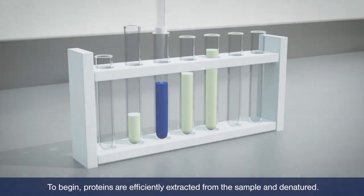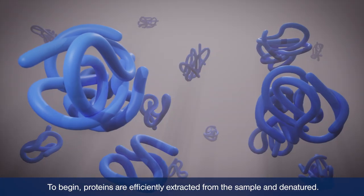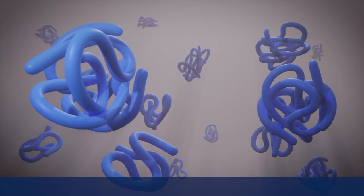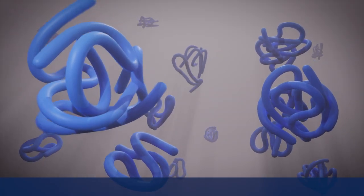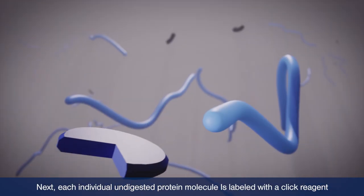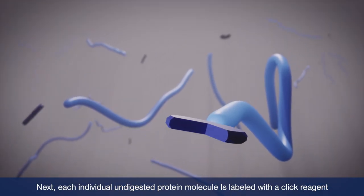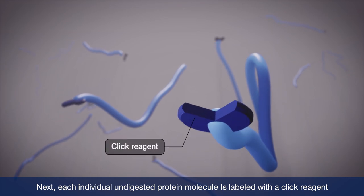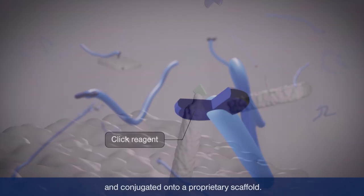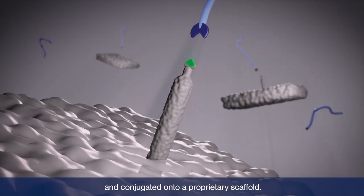To begin, proteins are efficiently extracted from the sample and denatured. Next, each individual undigested protein molecule is labeled with a click reagent and conjugated onto a proprietary scaffold.